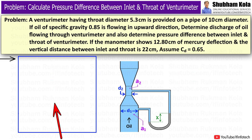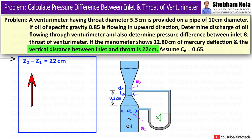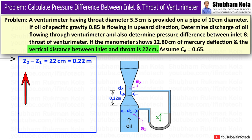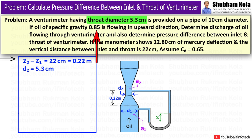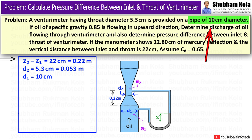To solve this problem, I will first write down the given data. The vertical distance between inlet and throat section is 22 cm, that means Z2 minus Z1 is 22 cm, i.e. 0.22 m, where Z2 is the potential head at section 2 and Z1 is the potential head at section 1. The throat diameter is 5.3 cm, i.e. 0.053 m, denoted as d2, and the pipe diameter is 10 cm, i.e. 0.1 m, denoted as d1.